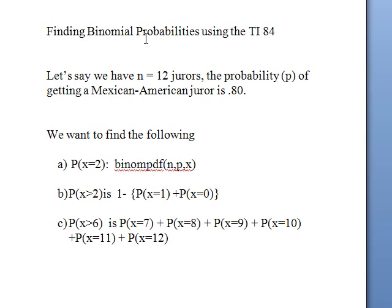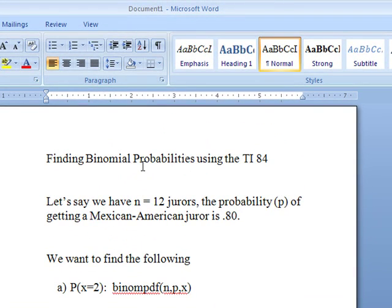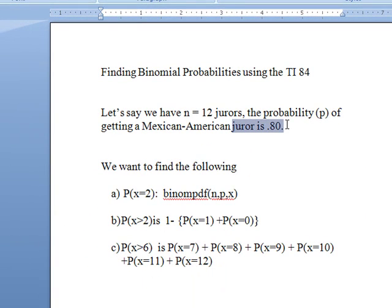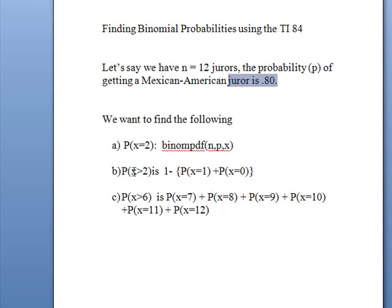Let's say we have 12 jurors that we're choosing and the probability of getting a specific juror is 80%, or if you see here it says 0.80. Now we want to find the following probabilities when we're looking for two jurors, more than two, or more than six.